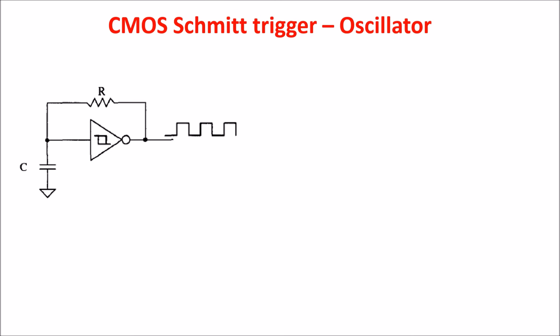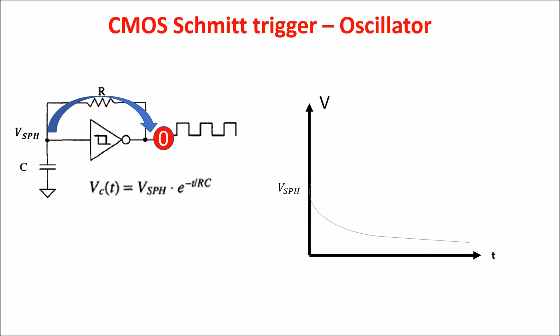The Schmitt Trigger can also be used as an oscillator. The delay time in charging and discharging a capacitor is used to set the oscillation frequency. At the moment when the output of the Schmitt Trigger switches low, the voltage across the capacitor is VSPH. The capacitor then starts to discharge toward ground, and the voltage across it follows an exponential relation. When the voltage decreases to VSPL, the Schmitt Trigger switches high. So the first half of the oscillation period T1 is the discharging time of the capacitor.